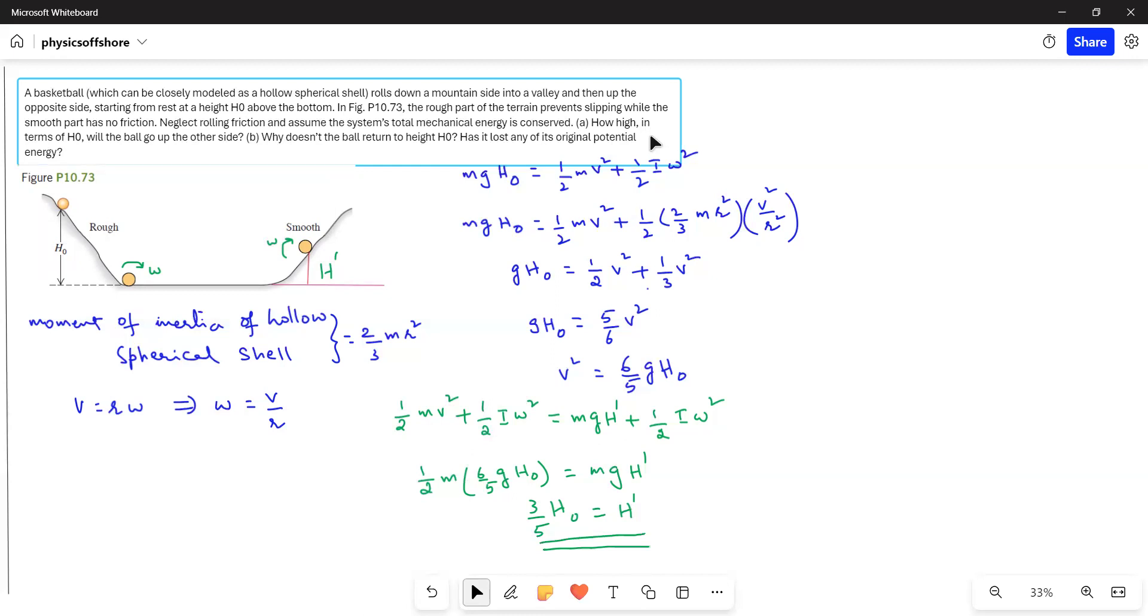Why doesn't the ball return to the height H0? Because here some of the initial potential energy has been converted into rotational kinetic energy and also translational kinetic energy. So because it gets converted into rotational kinetic energy, there is less of the potential energy.